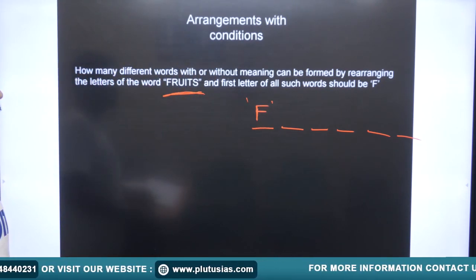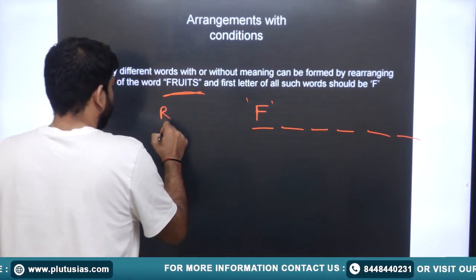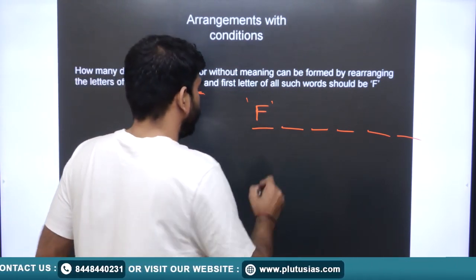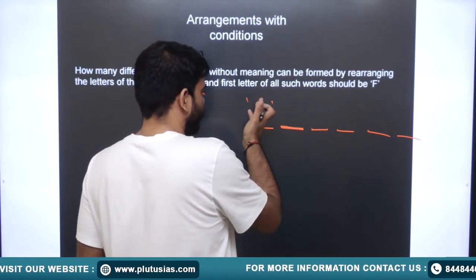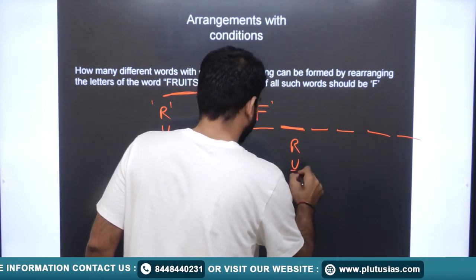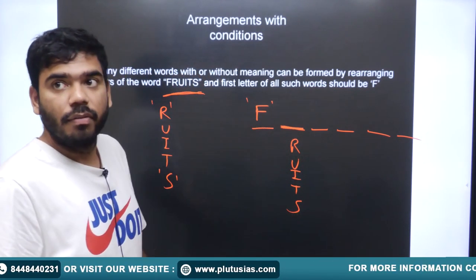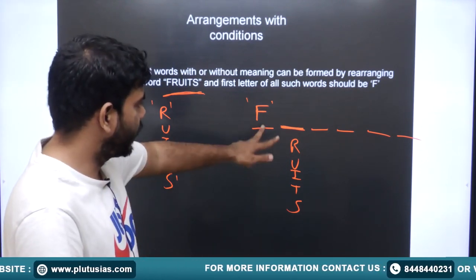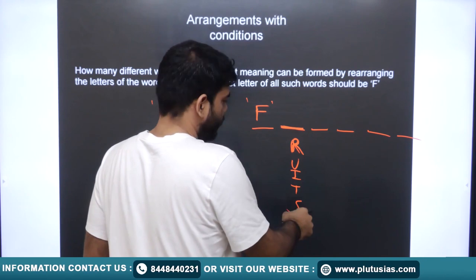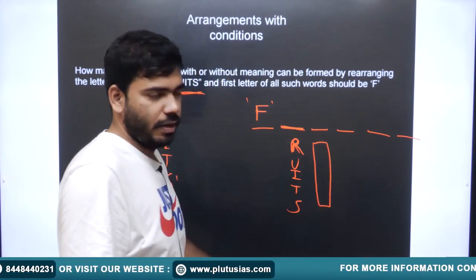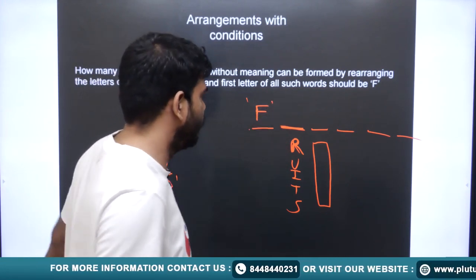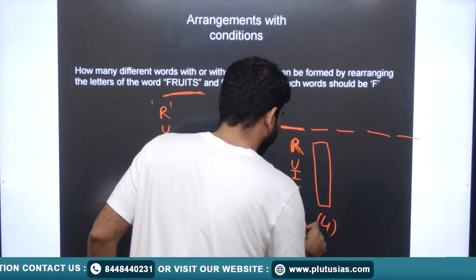Since F is fixed at the first place, we are left with five different letters: R, U, I, T, S. For the second place we have five possibilities. For the third place, one of those five will have been used, so we have four letters left. Then three, then two, then one — exactly the same logic as before.